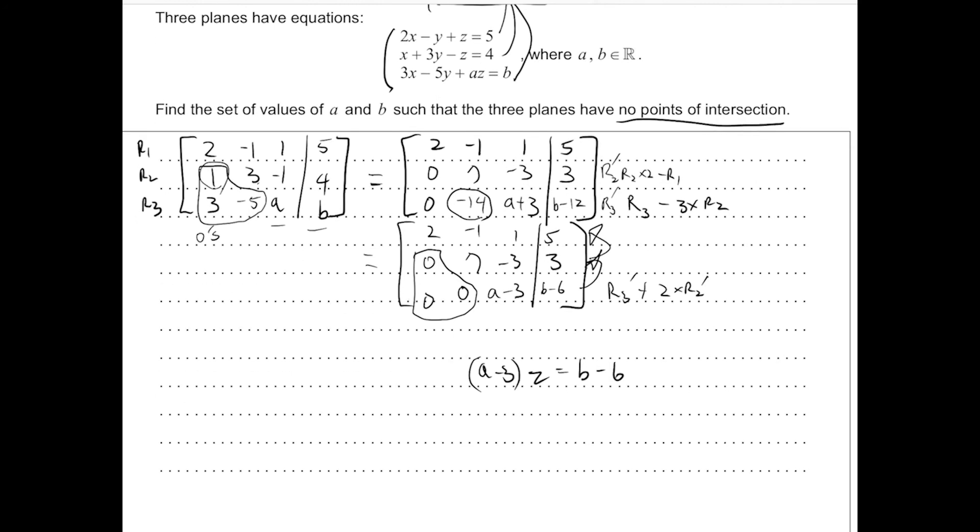But if A were to equal 3, and B were not to equal 6, what we would have is 0 times X plus 0 times Y plus 0 times Z equals D, where D would be a non-zero value. So no value of X, Y, Z can satisfy this case. So for the three planes to have no points of intersection, A has to equal 3, B cannot be 6.